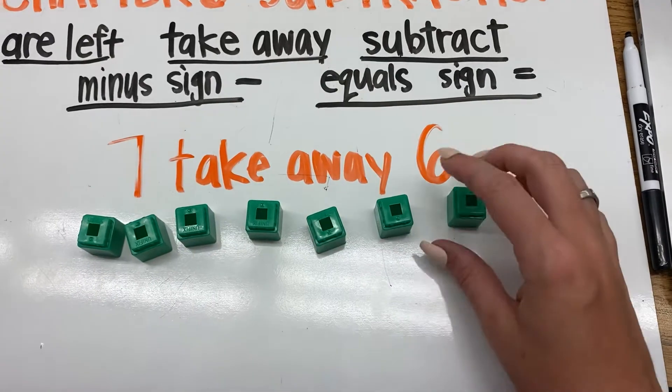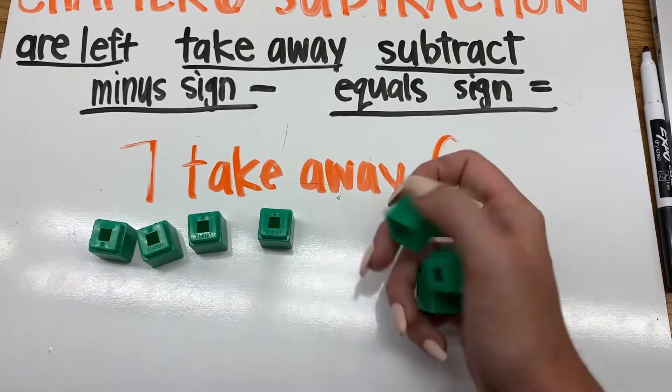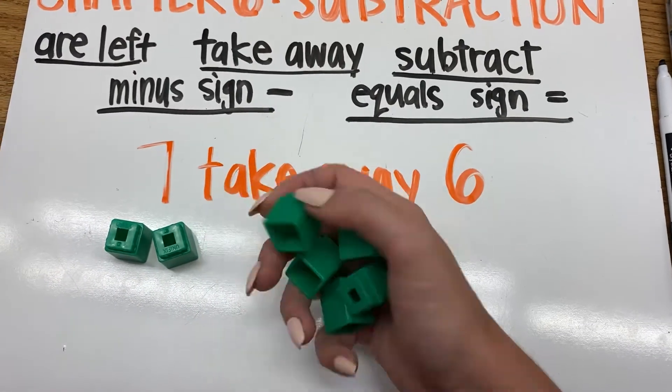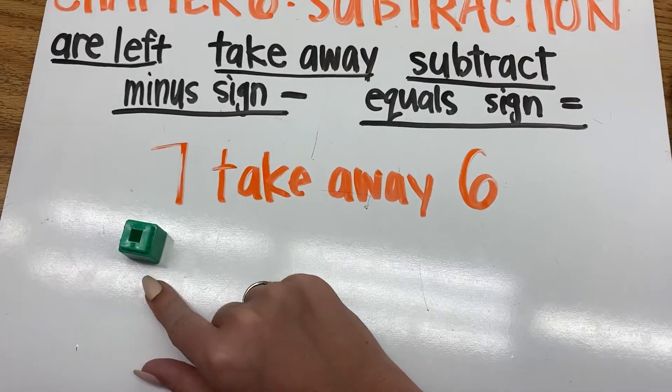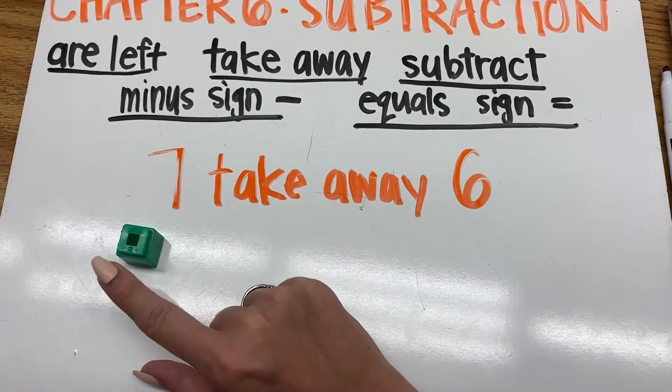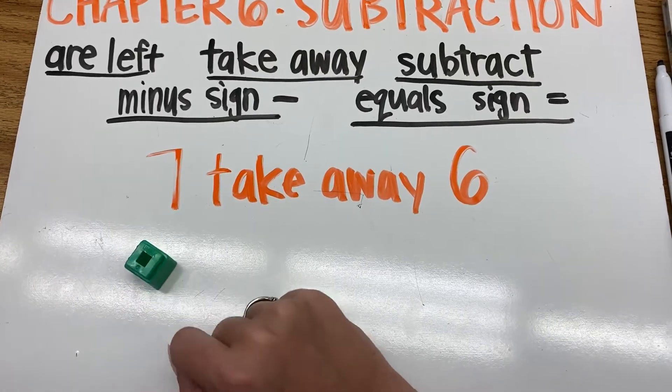Then we want to take away six. So let's take away one, two, three, four, five, six. So how many are left? Just one, right?